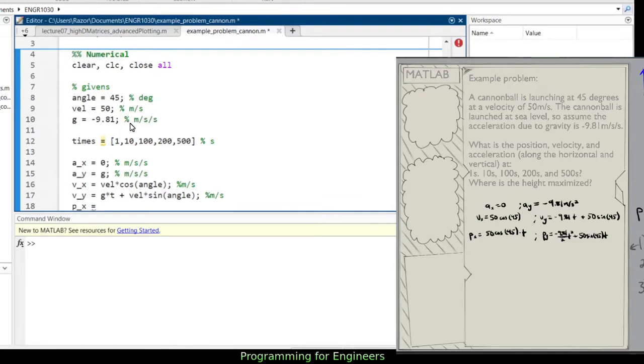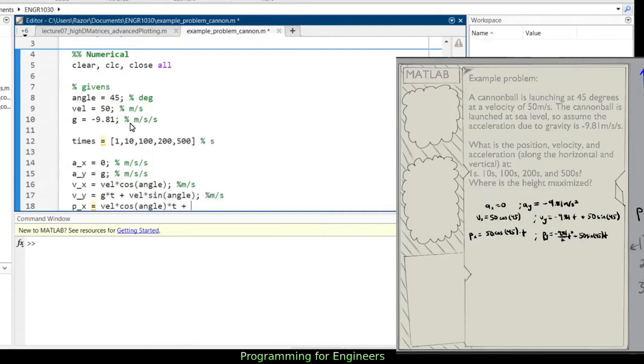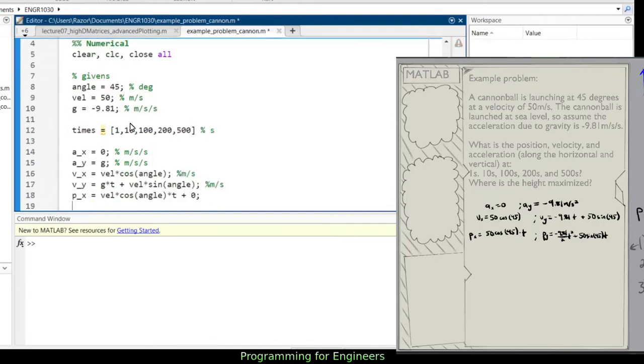The velocity in x is velocity times cosine of angle in meters per second, the velocity in y is g times t plus velocity times sine of angle, again in meters per second. The position in x is velocity in x times t plus the initial position, 0.